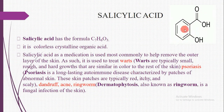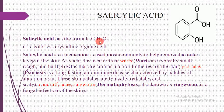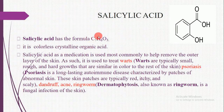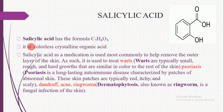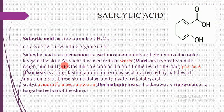Look at the structure of salicylic acid. Salicylic acid has the chemical formula C7H6O3 — 7 carbon atoms, 6 hydrogen atoms, and 3 oxygen atoms. Salicylic acid is a colorless crystalline organic acid. As a medication, it is most commonly used to help remove the outer layer of the skin.